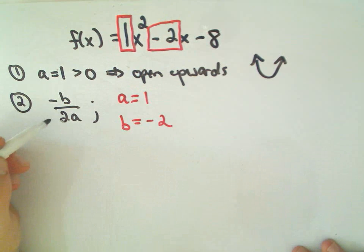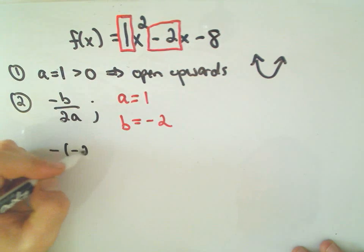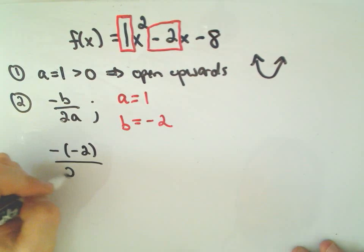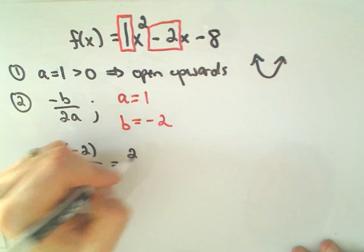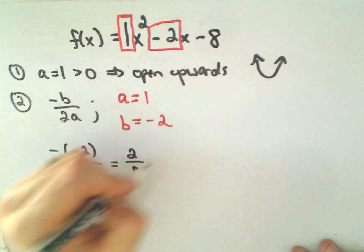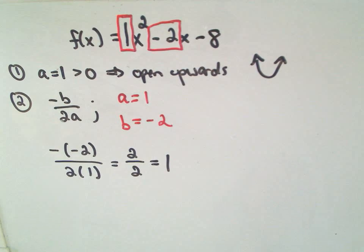So if we use the formula negative b over 2a, we'll just have negative of negative 2. And then we take 2 times the a value, which is 1. So we'll simply get 2 over 2, which says the x-coordinate of our vertex is going to equal 1.